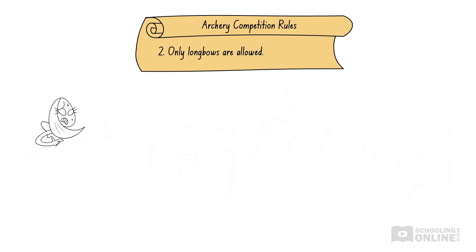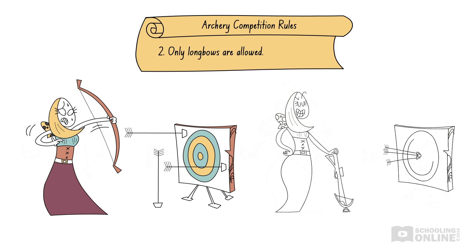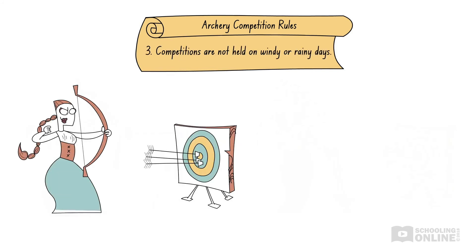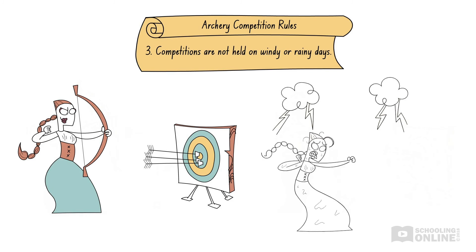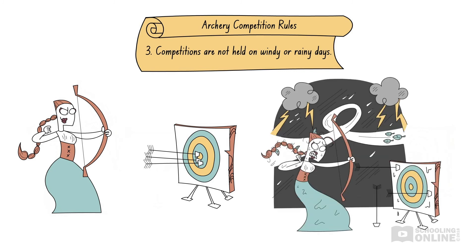The second rule states that only longbows are allowed. As we saw with Chelsea the cheater, it requires less skill to aim with a crossbow than a longbow. Therefore, each archer needs to use the same type of bow, or we can't make fair judgements about each archer's ability to hit the bullseye. The third rule says that competitions are not held on windy or rainy days. Rain causes arrows to slip off bow strings and obscures competitors' vision, while wind blows arrows off course, making it more difficult for everyone to shoot.